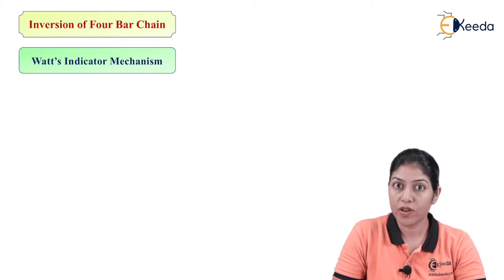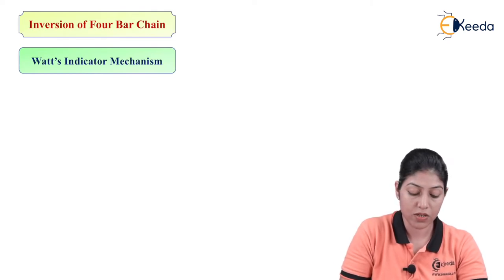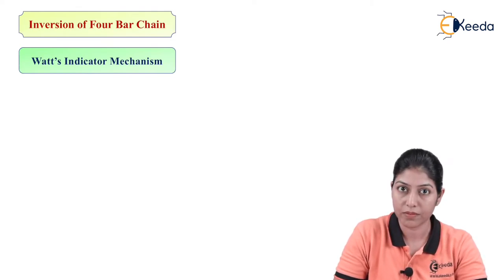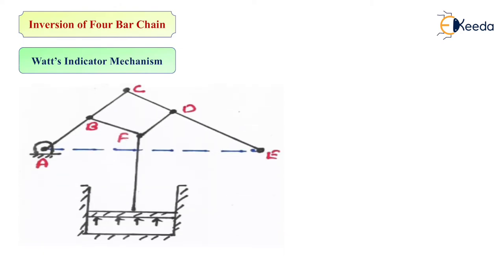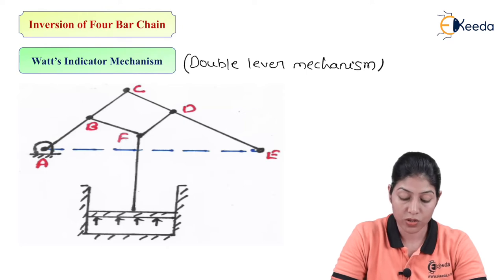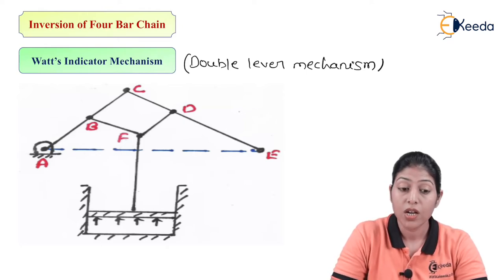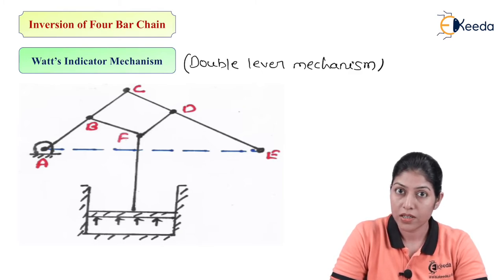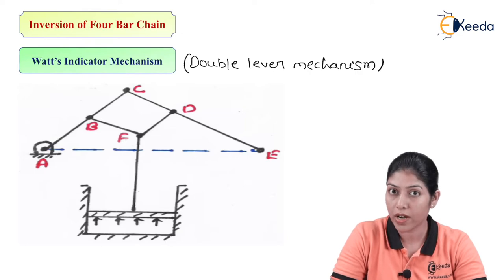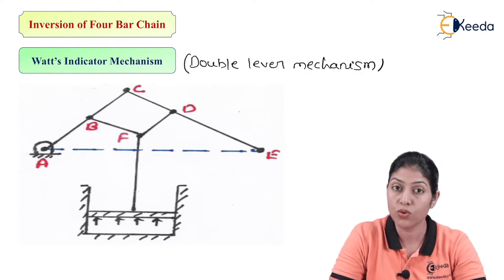The next type of inversion I am going to discuss is Watt's indicator mechanism. This is also called the double lever mechanism because we are using two levers — like the previous inversion had two cranks, here we consider two levers — that is why it is called the double lever mechanism.